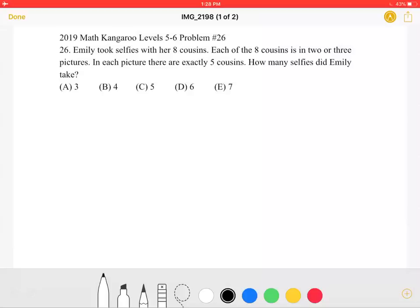This is the 2019 Math Kangaroo Levels 5-6, Problem Number 26. Emily took selfies with her eight cousins. Each of the eight cousins is in two or three pictures. In each picture, there are exactly five cousins. How many selfies did Emily take?